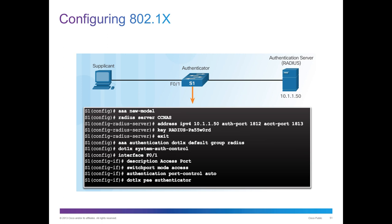How do we configure this? AAA new model, set up our RADIUS server — name it, give it the IP address, set up the auth and accounting ports, set up the shared password. After that, set up AAA authentication dot1x with a default option, give it a group to connect with, then dot1x system-auth-control, and apply it to an interface. This will do no good until you actually apply it to an interface. Here we have a description, switchport, authentication port-control auto, and then we're telling it what protocol to send to the authenticator.